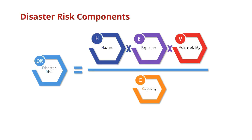When we talk about disaster risk, it is often demonstrated as a function of hazard, exposure, vulnerabilities, and capacity. Now let's look into each of them in detail.